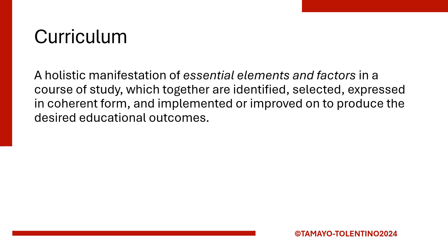Therefore, curriculum is a holistic manifestation of essential elements and factors in a course of study which together are identified, selected, expressed in coherent form, and implemented or improved on to produce the desired educational outcomes. From this definition of Bevis in 1973, we can see that a curriculum is not just a list of subjects or topics to be taught, but there should be coherence with a rational and logical sequence and progression. This definition also describes that a curriculum should be improved, giving us insight that monitoring and evaluation is part of curriculum planning.